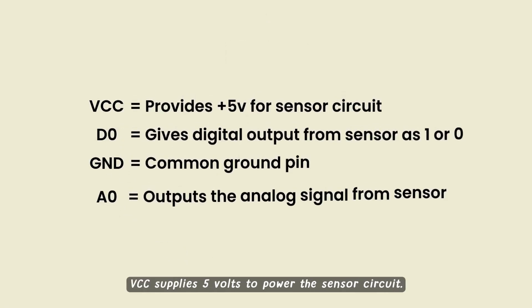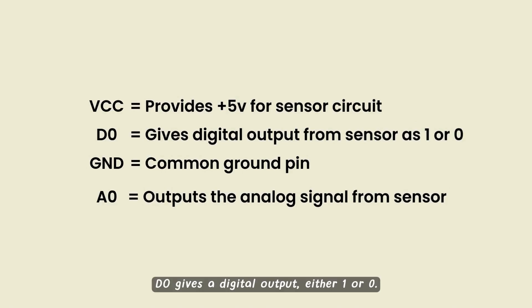VCC supplies 5 volts to power the sensor circuit. DO gives a digital output, either 1 or 0. GND is the common ground connection. AO sends out the analog signal based on the sensor's reading.